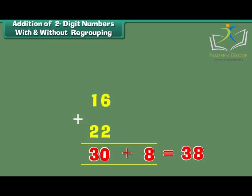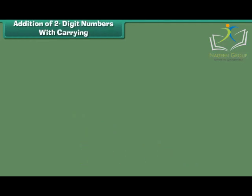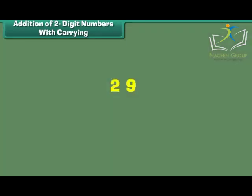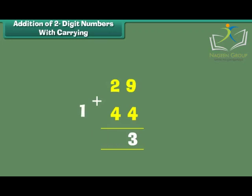Therefore, 16 plus 22 is equal to 38. Addition of 2 digit numbers with carrying. Another technique of adding two 2-digit numbers is through carrying. What is 29 plus 44? The digits at the 1s place are 9 and 4. 9 plus 4 is equal to 13. Write 3 at the 1s place and carry over 1 to the 10s place. The digits at the 10s place are 1, 2 and 4. 1 plus 2 plus 4 is equal to 7. Therefore, 29 plus 44 is equal to 73.